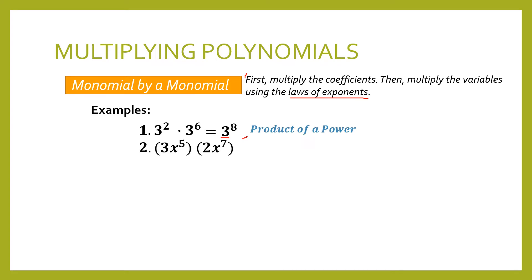Here is the next example. How about if we have numbers or numerical coefficients and literal coefficients? To solve this, we multiply 3 and 2, and then also multiply x raised to 5 times x raised to 7. So we have 3 times 2 times x raised to 5 plus 7. We are using product of a power to solve this part. Simplifying further, 3 times 2 is equal to 6, times x raised to 12. So the final answer for example 2 is 6x raised to 12.